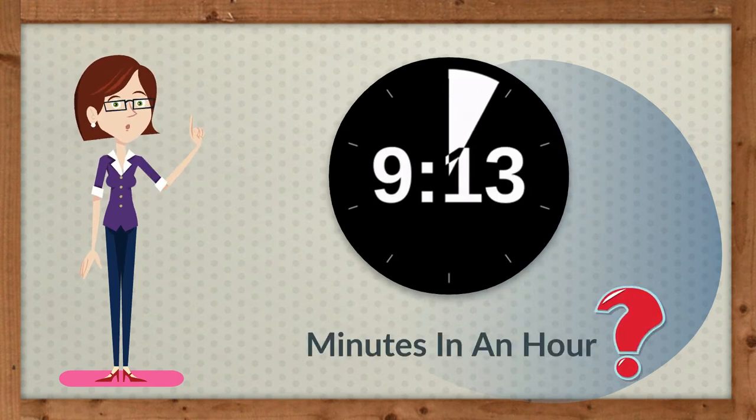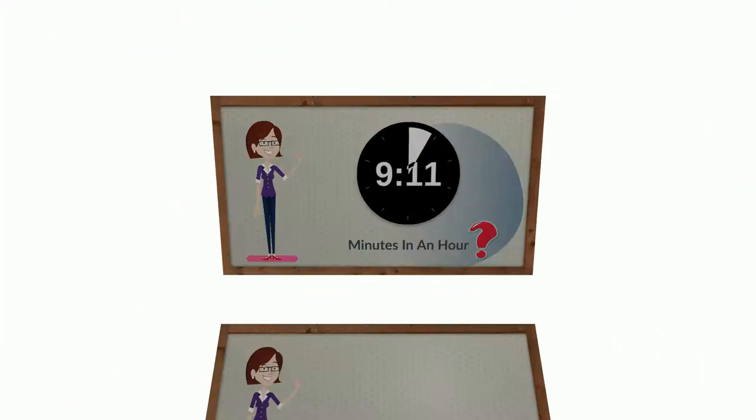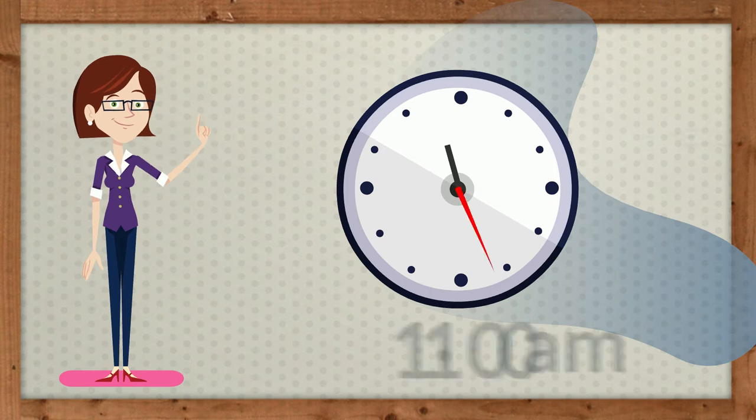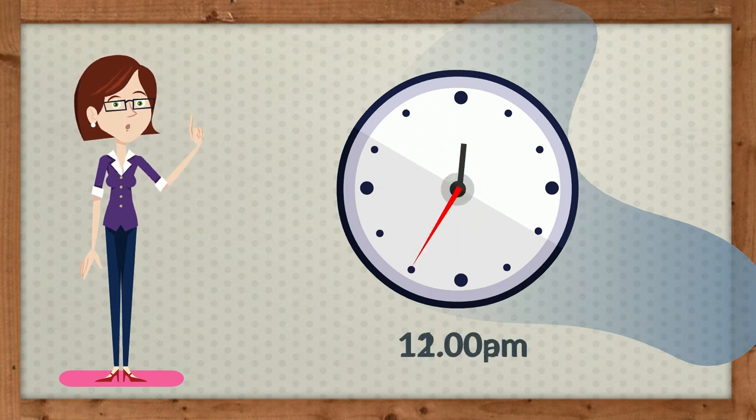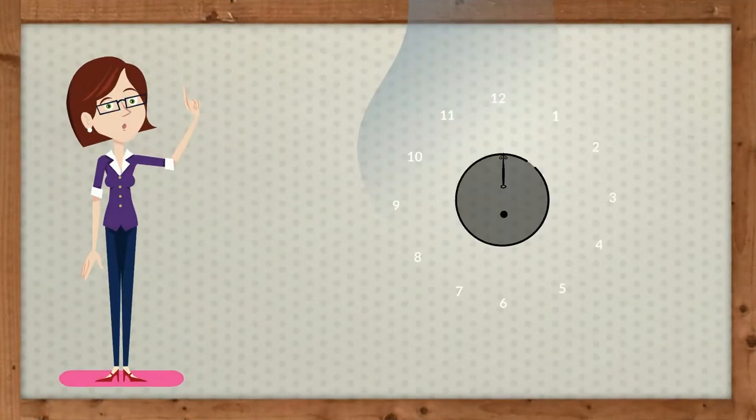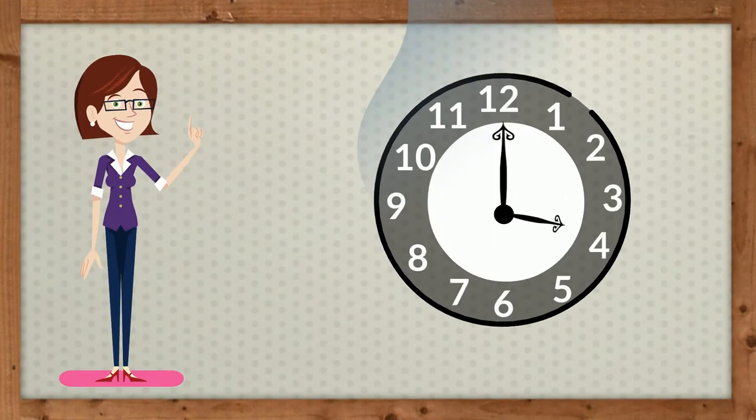This is a clock which shows us time. A clock in general has 12 numbers written on it from 1 to 12.